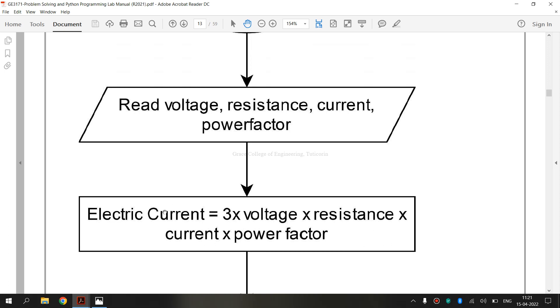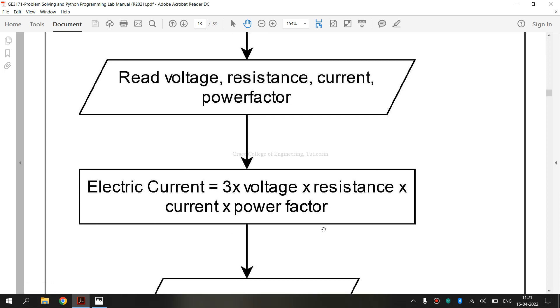Then this symbol is known as the process symbol. It shows a process or action step. It is the most common symbol in the flowchart.